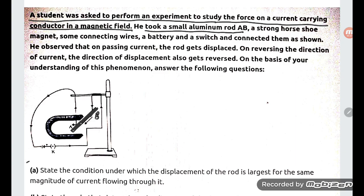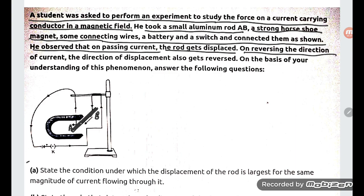This is A and this is going to be B. A strong horseshoe magnet, some connecting wire, battery and switch are connected as shown. He observed that on passing current the rod gets displaced. On reversing the direction of current, the direction of displacement also gets reversed. On the basis of your understanding of this phenomenon, answer the following questions.